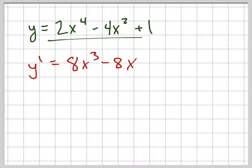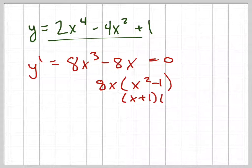So let's first of all set that equal to 0. And when I do that, I'm going to factor out an 8x and I'll have x squared minus 1, which is nice because that factors into x plus 1 and x minus 1. So very quickly, if you're good at factoring, you can see right away that my zeros are going to be 0, 1, and negative 1.